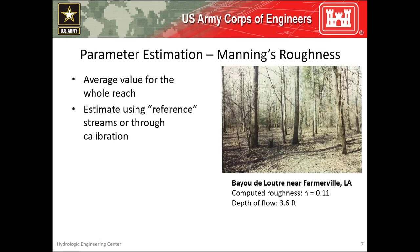The Manning's n roughness coefficient should be set as the average value for the whole reach. This value can be estimated using reference streams with established roughness coefficients or through model calibration. As an example, the image to the right is of a floodplain in Louisiana with a computed Manning's n of 0.11.